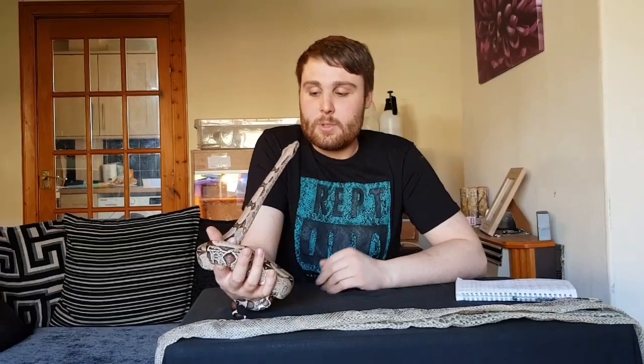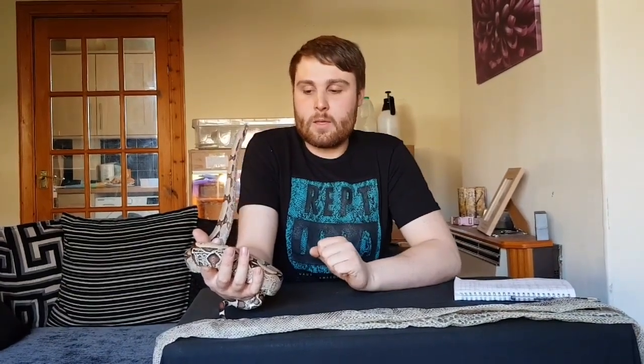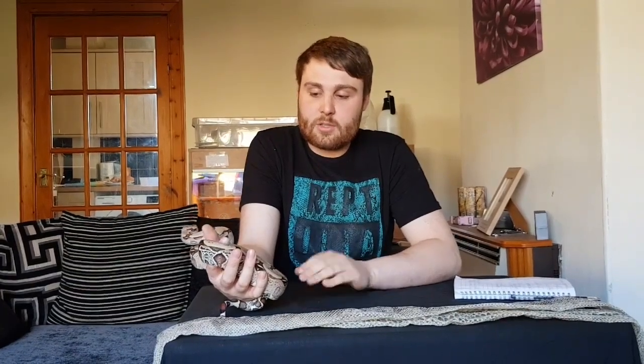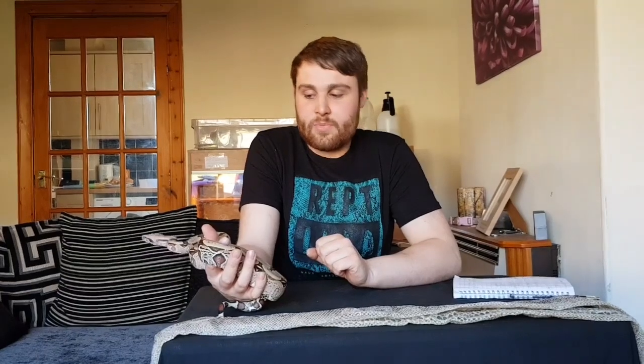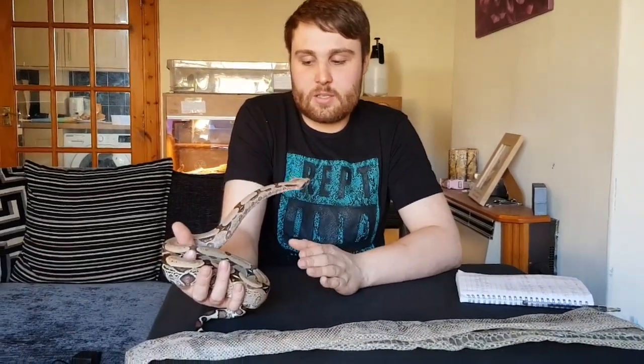Your true red tails tend to be bigger. Male common imperators will get to about five to six feet; female commons can get to about eight feet. True red tails have been known to get to about twelve feet, although that's quite rare — ten feet is certainly easily attainable. But just because it's a bigger snake doesn't mean it's a better snake, and there's nothing wrong with having a common.